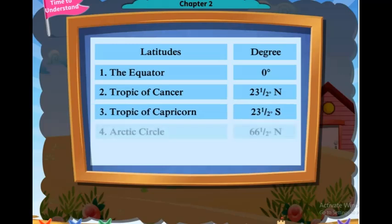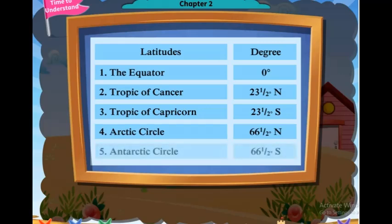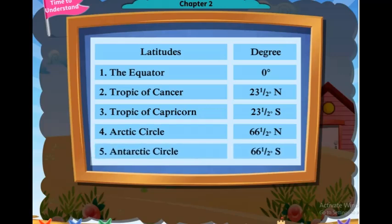4. Arctic Circle — 66.5 degrees north. 5. Antarctic Circle — 66.5 degrees south.